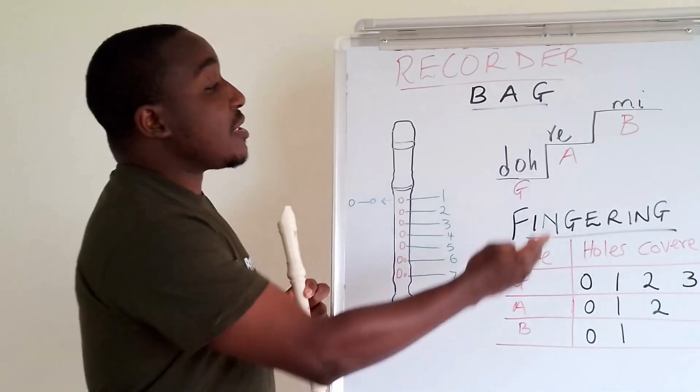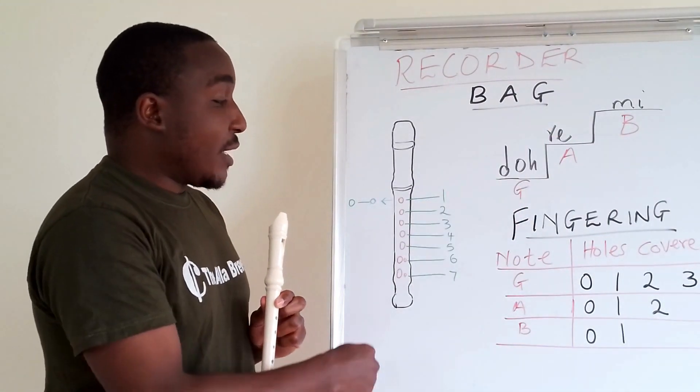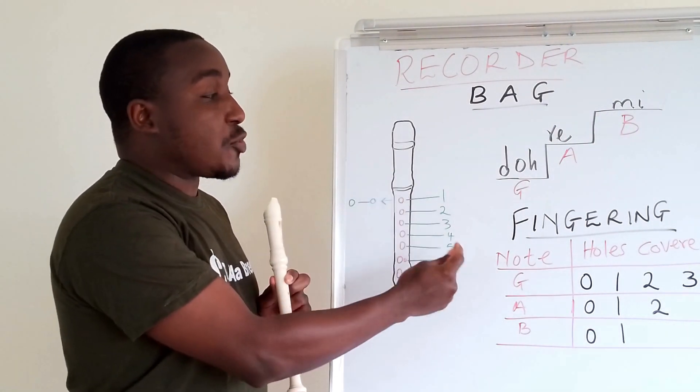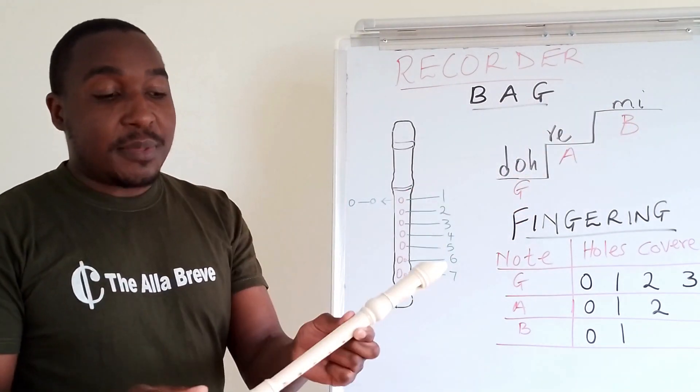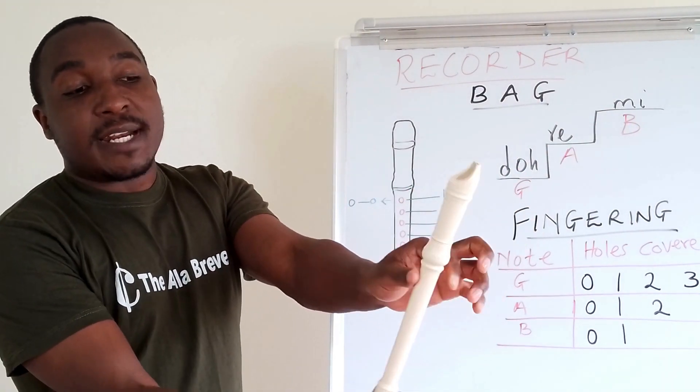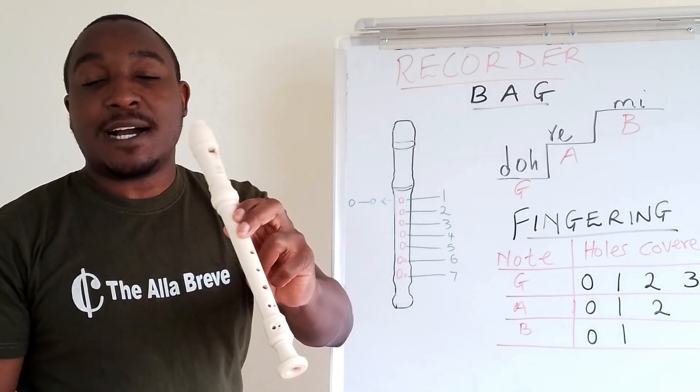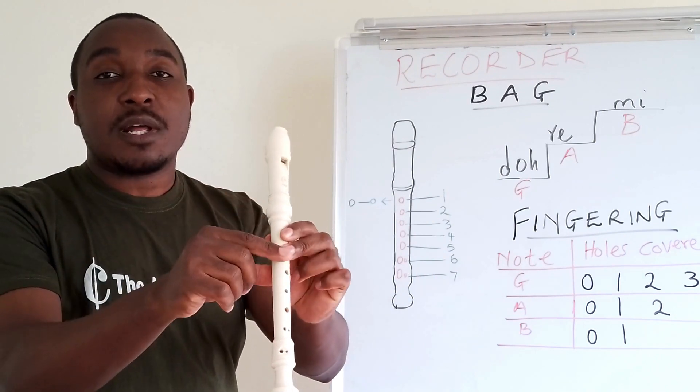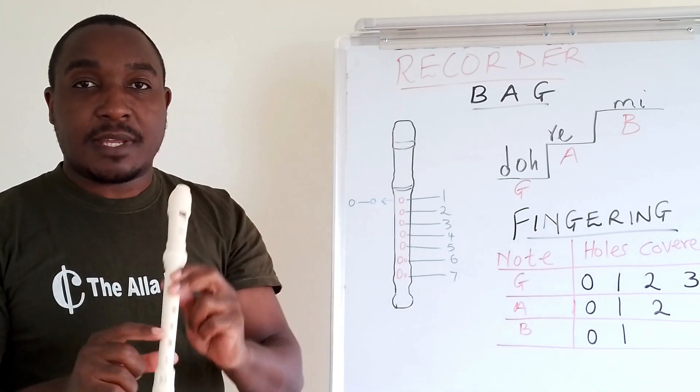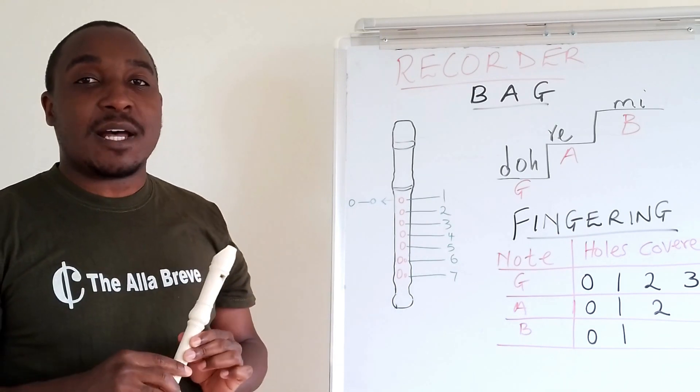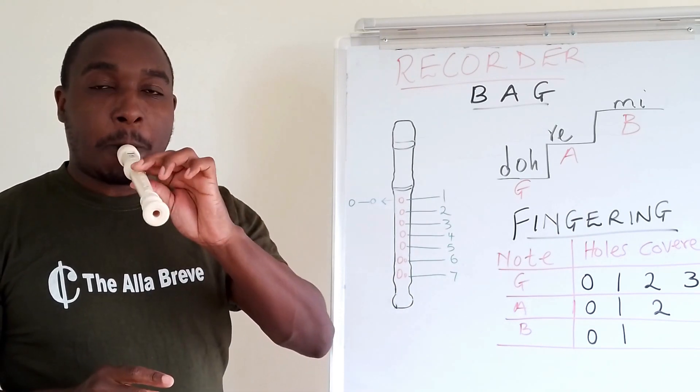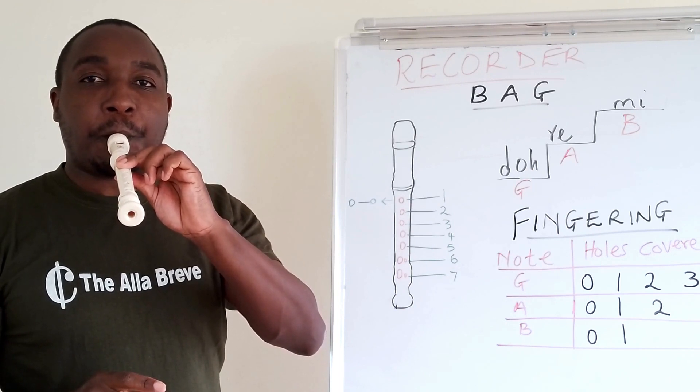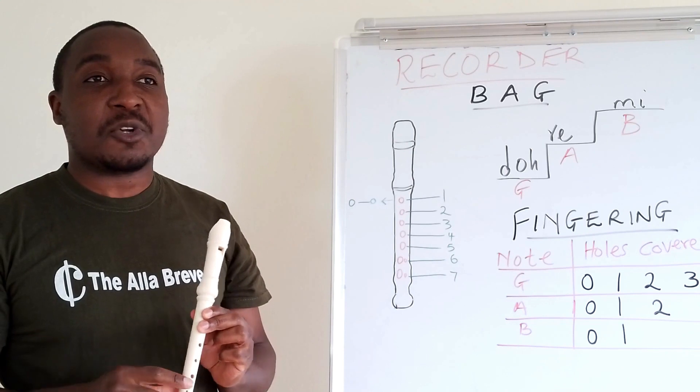Now, to play NOTE A, we will cover hole number 2, in addition to 0 and 1 that we played with NOTE B. So, in this case, I am still holding NOTE B. I add the middle finger of the left hand. So, I cover 0, 1 and 2. This is NOTE A. And this is how NOTE A sounds. One more time, NOTE A.